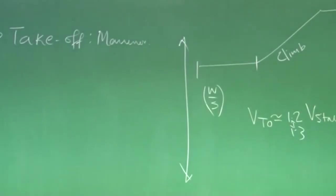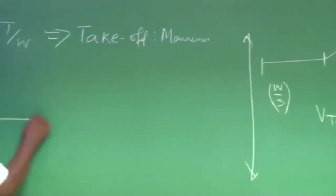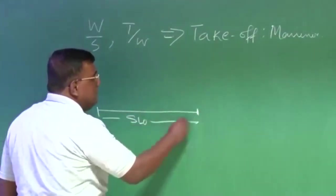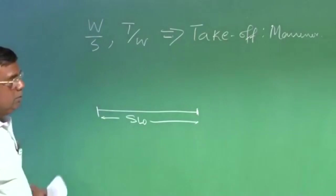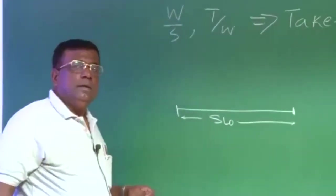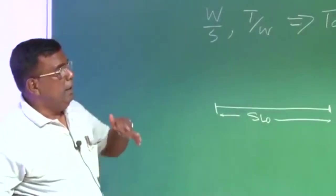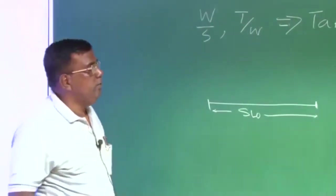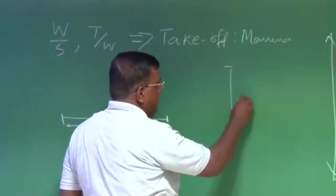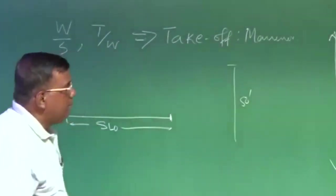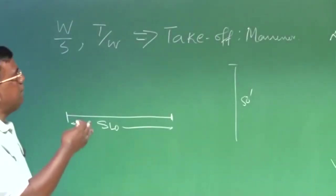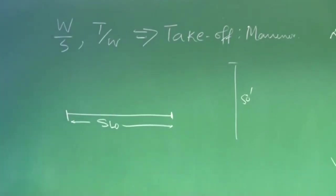This is a quick look on V stall, but when I come for takeoff, for a designer, he looks for what is that distance I require to ensure that after that it has enough speed. And if he rolls up like this, he should be able to go for takeoff and as per the definition he should clear 50 feet height, that is as per the regulations.